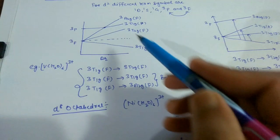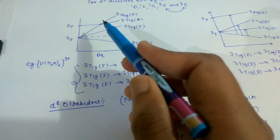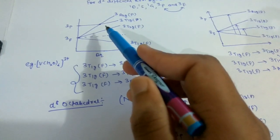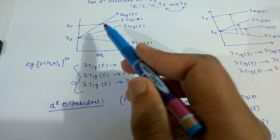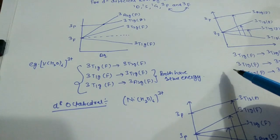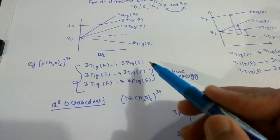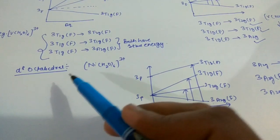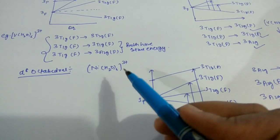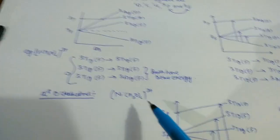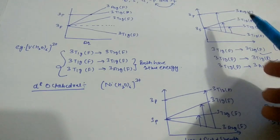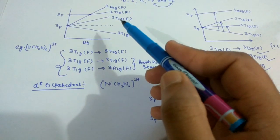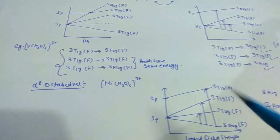This is the Orgel diagram for d² and d⁸ systems. The cross point corresponds to the water ligand. If we have a ligand placed above water in the spectrochemical series, then we will get three lines; otherwise we will get only two lines. For d⁸ octahedral complexes like [Ni(H₂O)₆]²⁺, the levels are simply reversed: ³A₂g comes downward, then ³T₂g, then ³T₁g.